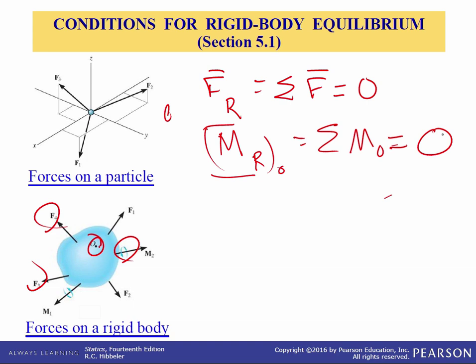When applying the equations of equilibrium we'll assume the body remains rigid. Really though bodies deform when they're subjected to loads. Although this is the case most engineering materials such as steel and concrete are very rigid and so their deformation is usually very small. Therefore when applying the equations of equilibrium we assume that the body does not deform under the applied load. The direction of the applied forces and their moment arms with respect to a fixed reference remain the same both before and after the body is loaded.